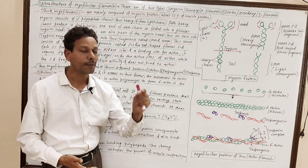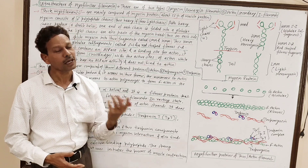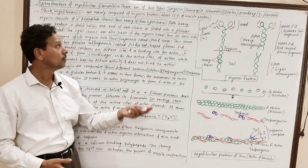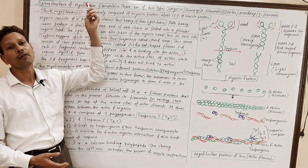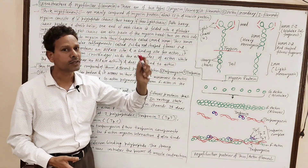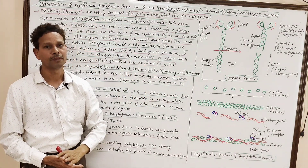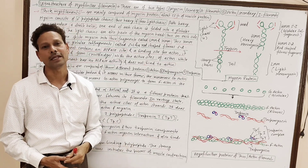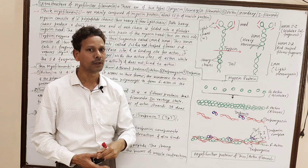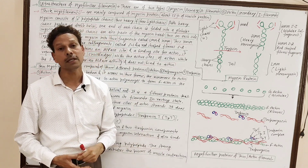As we know, the myofilaments are of two types: thick myofilaments and thin myofilaments. First of all, we will discuss thick myofilaments. These thick myofilaments are mainly composed of myosin proteins. The myosin proteins constitute about 55% of muscle proteins.